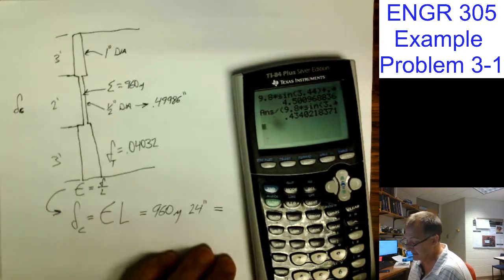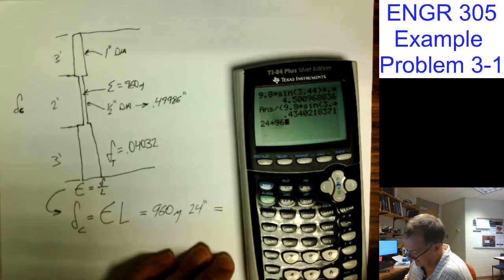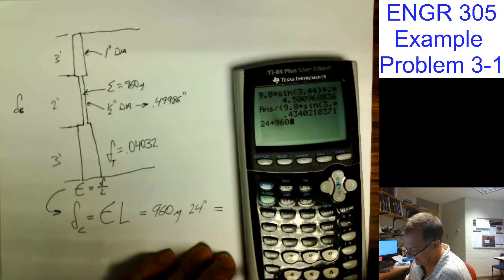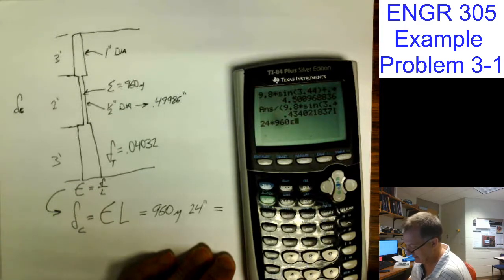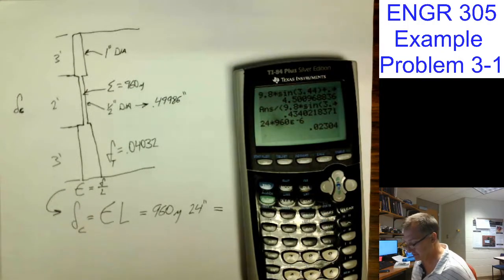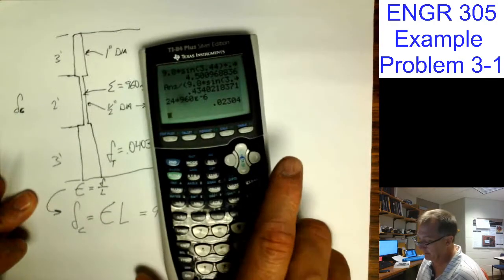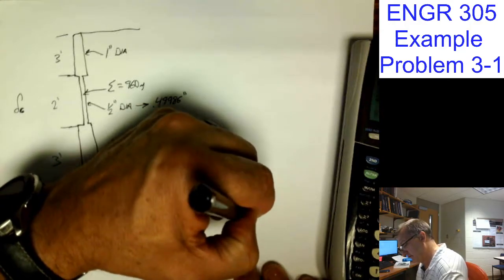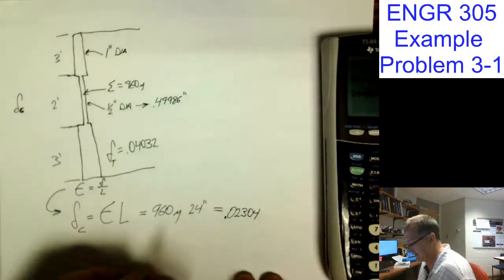Hold on. You can tell I'm filming in the office, so I've got this calculator in the office. I don't really use it very much, but times 960 micro. I always have to figure out at the beginning of the semester how to use this. Negative 6, enter. So that's 0.02304. I got five digits, fine, that's a lot.